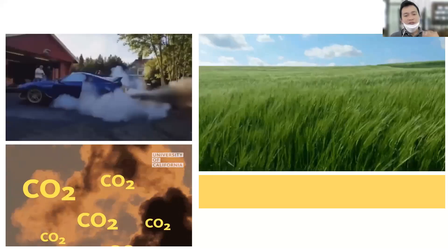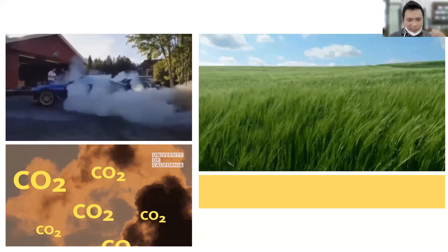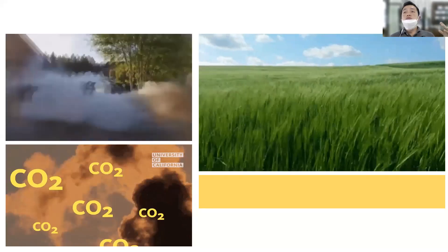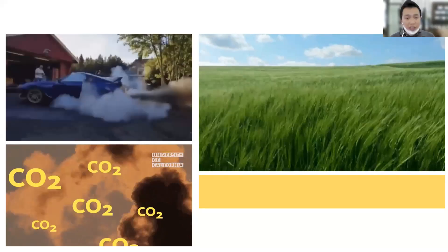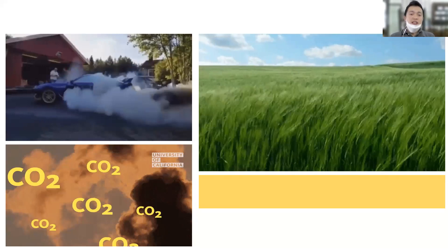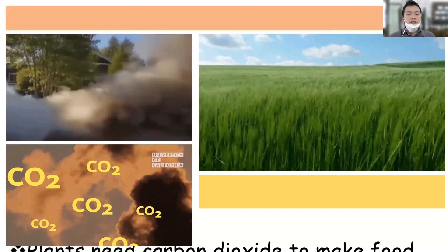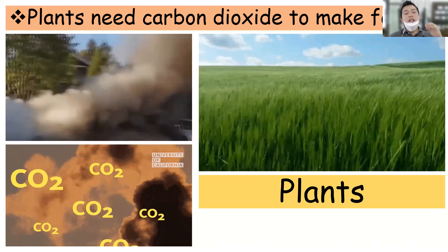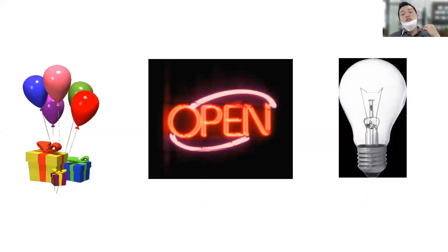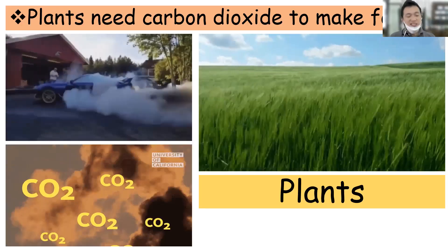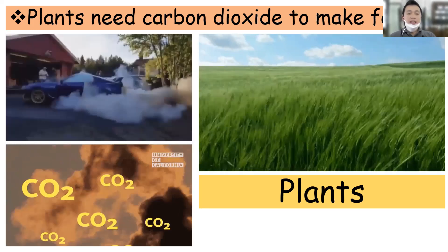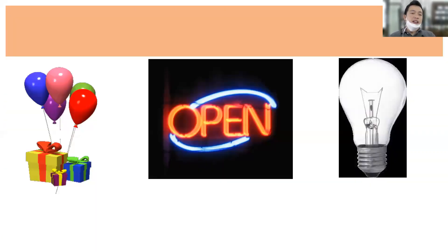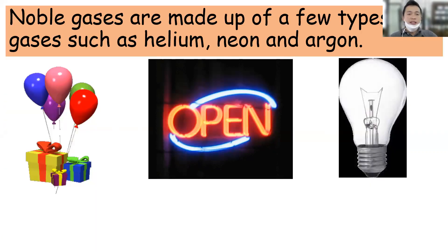The plants need carbon dioxide very badly in order for them to make food, and they will grow strongly and healthily. Right after the plants make their own food, the plants will grow healthily, and there are some living organisms dependent on them. I will tell you about that later.